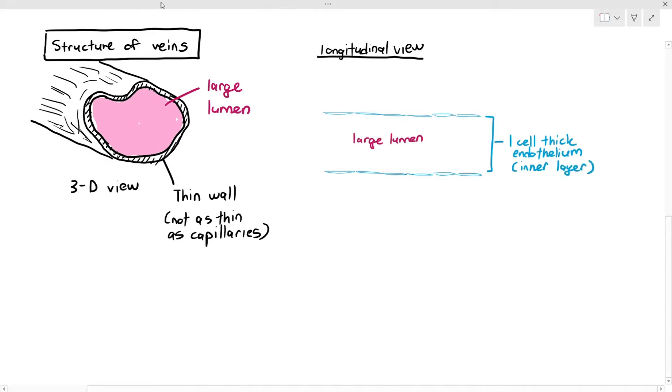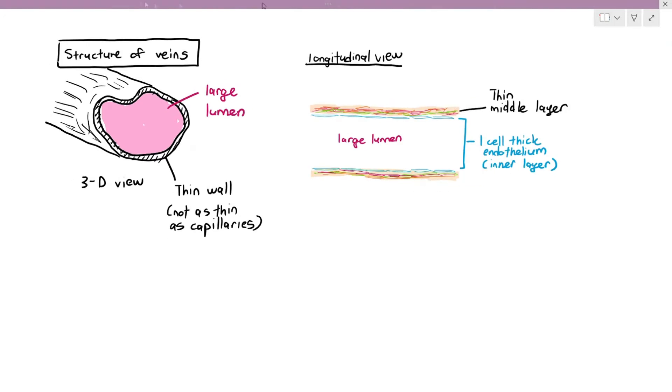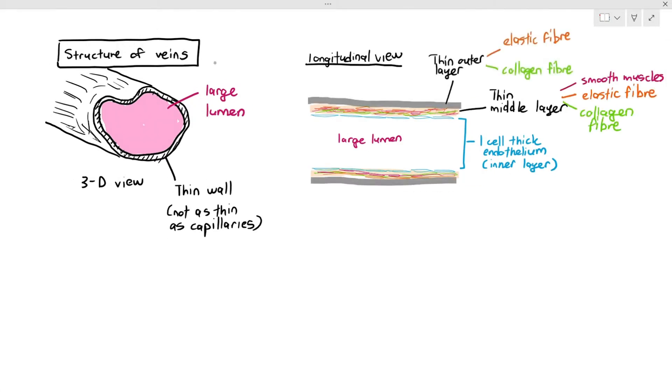Now, the second layer is the middle layer, which has the smooth muscles, elastic fiber, and collagen fiber, same as the arteries. The only difference is the middle layer is quite thin. And they also have a thin outer layer made up of elastic fiber and collagen fiber.